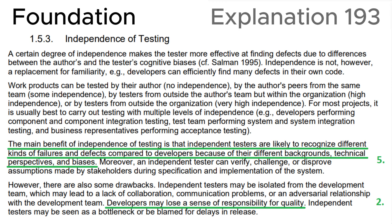Finally, let's look at section 1.5.3, independence of testing, in the ISTQB syllabus, where we can see that the main benefit of independence of testing is that independent testers are likely to recognize different kinds of failures and defects compared to developers because of their different backgrounds, technical perspectives and biases. And developers may lose a sense of responsibility for quality. This is fully consistent with statements 2 and 5.